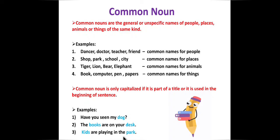'Kids are playing in the park.' When we say 'kids,' it can be any kid — your child, your neighbor's child, your cousin. And 'park' can be any park; you are not specifically mentioning the name of the park or the particular area. We are talking about the kids and the park in general, so kids and park are also common nouns.